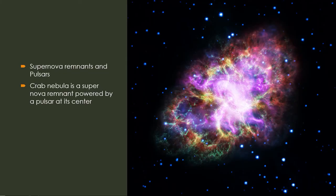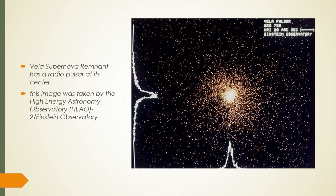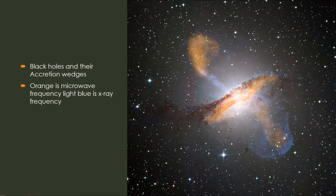Additional X-ray observatories include the Rossi X-ray Timing Explorer (RXTE), Chandra X-ray Observatory, and XMM-Newton. With X-rays we can observe amazing things like supernova remnants and pulsars. The Crab Nebula is a supernova remnant powered by a pulsar at its center. We can also see the Vela supernova remnant, which has a radio pulsar at its center, imaged by the Einstein Observatory. We can also see black holes and their accretion disks.